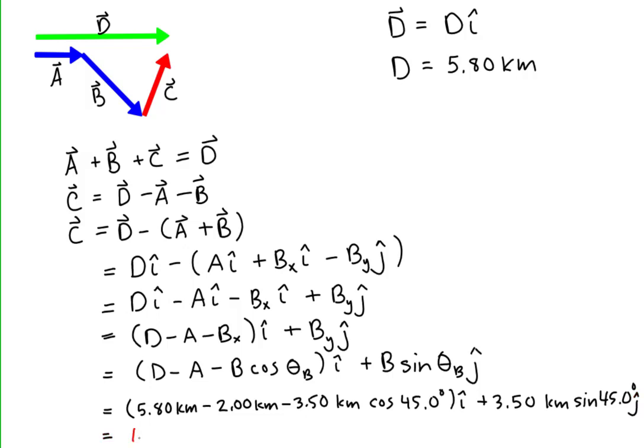Using my calculator, I get that c vector is 1.33 kilometers i-hat plus 2.47 kilometers j-hat.